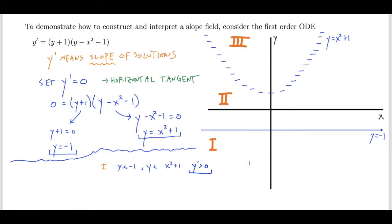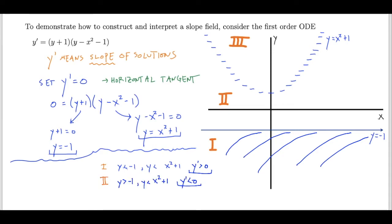Solutions in region 1 are always increasing, though they won't increase enough to break through the threshold. I'll try to represent that on the graph by drawing a few potential functions that are increasing up toward y equals negative 1. I'll follow a similar process for region 2. Based on the properties of the inequality, I can determine that in region 2, solutions are all decreasing.